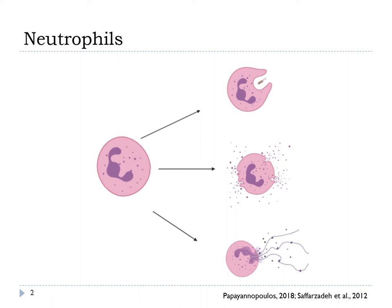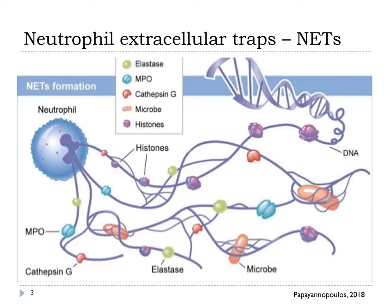the first line of defense against microbial infections, eliminating pathogens through phagocytosis, degranulation, and formation of extracellular neutrophil traps. NETs are large web-like structures composed of cytosolic and granule proteins that are assembled on a scaffold of decondensed chromatin.